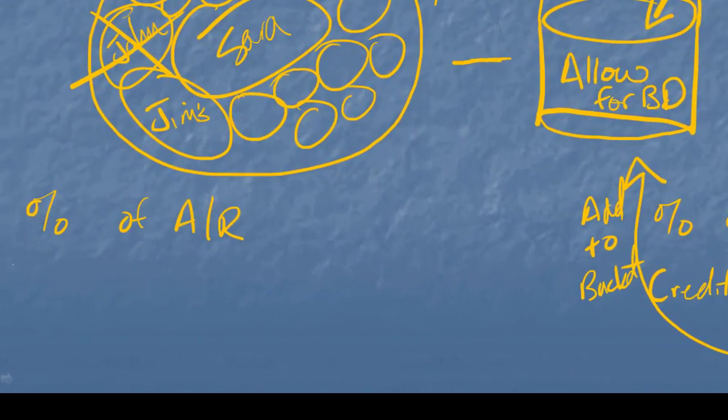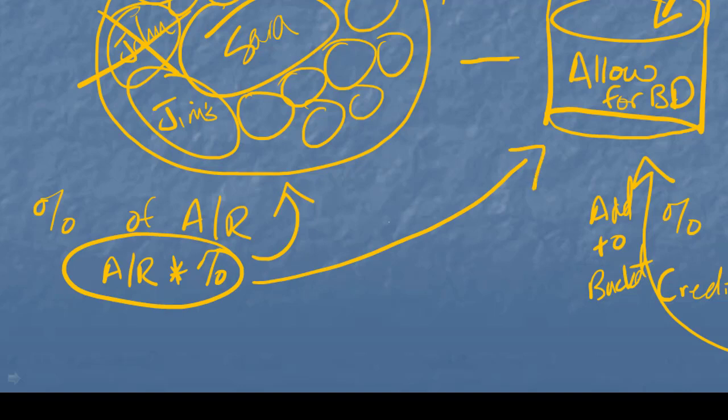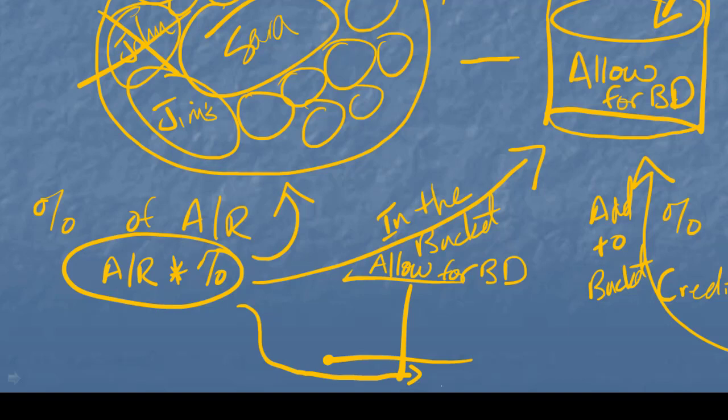The percent of accounts receivable method, on the other hand, doesn't use credit sales. Instead, it takes a look at our receivables. And it says, well, of all of these accounts receivable, I think this percent is going to rip us off. What I'm calculating here is not a bad debt expense. Instead, what I'm saying is, this is going to give me the total amount that's in the bucket. Or the total amount I want in my bucket. So if we're thinking about this from an accounting perspective, here's my allowance account. What I've just calculated, this percentage, is giving me this ending balance.